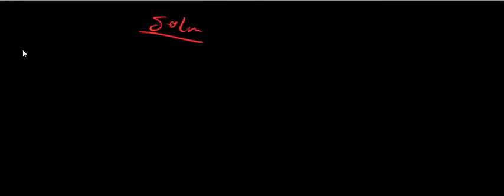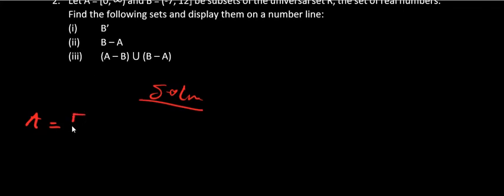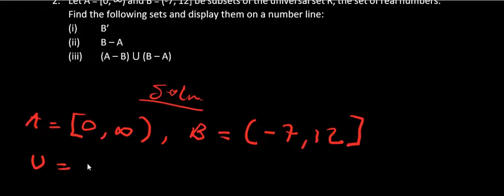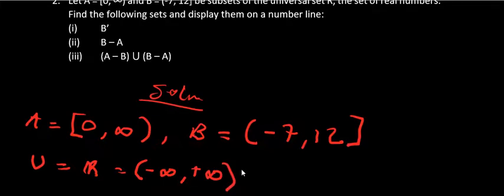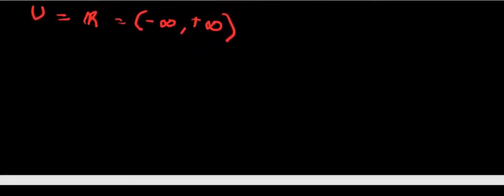We have been given that set A is equal to a set in block brackets. Set B has been given as open bracket negative 7 comma 12 close block bracket. The universal set has been told to be the set of real numbers, which means it is the set from negative infinity to positive infinity.